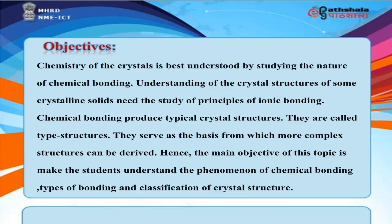The chemistry of crystals is best understood by studying the nature of chemical bonding. Understanding the crystal structures of some crystalline solids requires the study of principles of ionic bonding. Chemical bonding produces typical crystal structures, called type structures. They serve as the basis from which more complex structures can be derived. The main objective of this topic is to make students understand the phenomenon of chemical bonding, types of bonding, and classification of crystal structure.